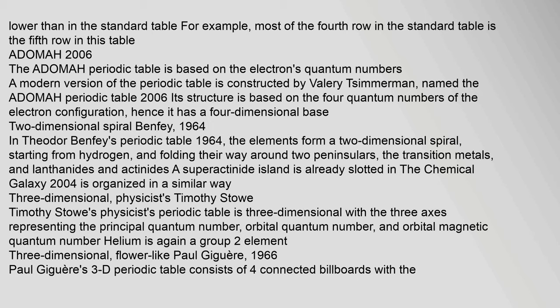ADOMA 2006: The ADOMA periodic table is based on the electron's quantum numbers. A modern version of the periodic table constructed by Valerie Simmerman, named the ADOMA periodic table (2006), has a structure based on the four quantum numbers of the electron configuration, giving it a four-dimensional base. Two-dimensional spiral: Benfey, 1964.